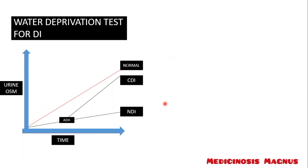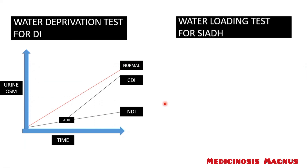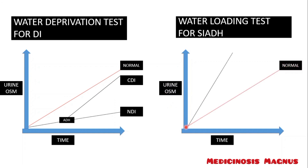For SIADH, there is another test called the water loading test. Normally when you give lots of water to a patient, they excrete a lot of water in the urine, meaning less electrolytes in urine and low urine osmolality. But if the patient has SIADH, even after giving lots of water, high ADH causes them to conserve all the water in the body, so the urine has more electrolytes — giving high urine osmolality.